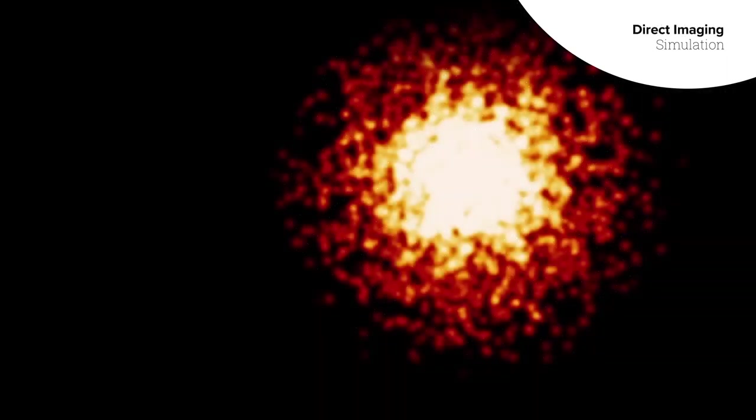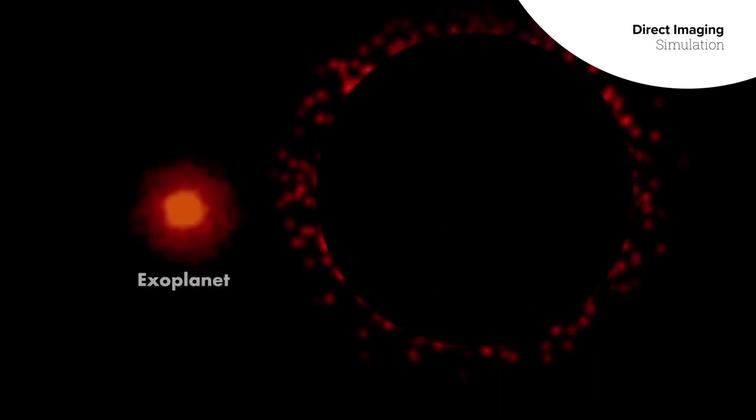As far as getting pictures of the actual exoplanets themselves, it's possible, but very difficult. The telescope has to block the bright star's light to reveal the faint planet nearby.